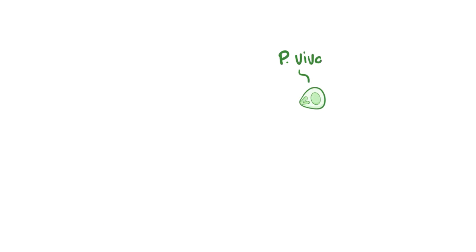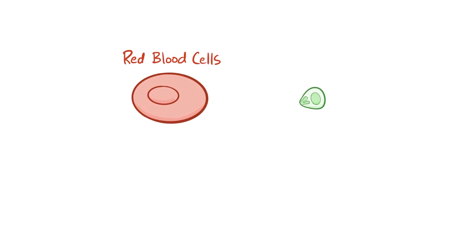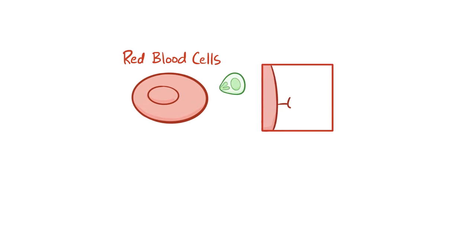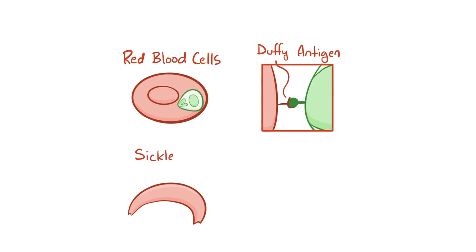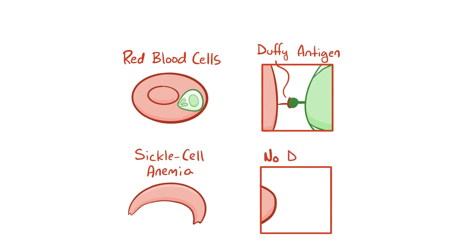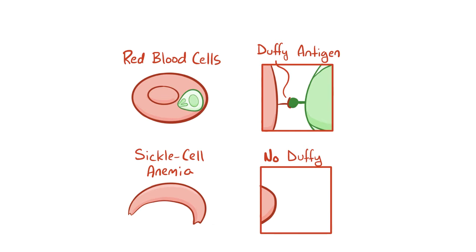Plasmodium vivax uses a specific erythrocyte surface receptor called the Duffy antigen. Some individuals, particularly those with sickle cell anemia, lack this receptor, meaning that Plasmodium vivax can't get into their cells. In other words, having sickle cell anemia is genetically related to having relative protection from Plasmodium vivax.